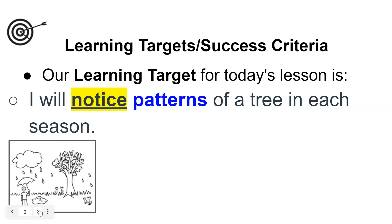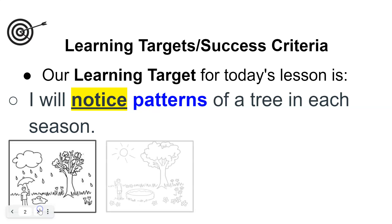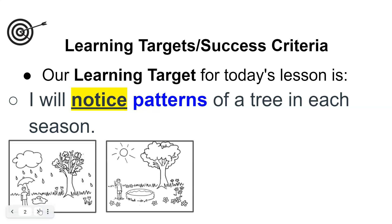So we have the season of spring. Let's look at this tree — it's starting to get leaves, starting to get some blooms on it. Then we have summer where it's full of leaves.